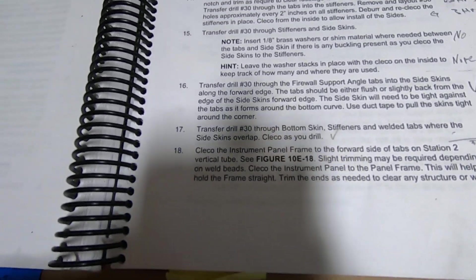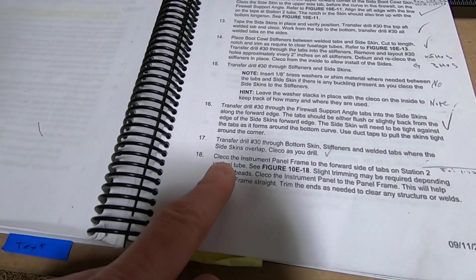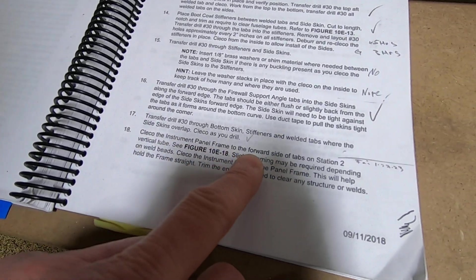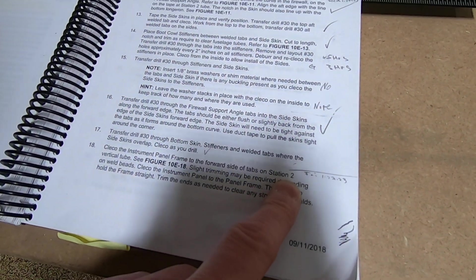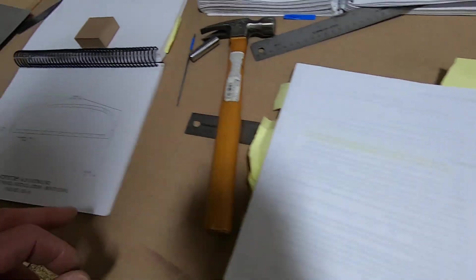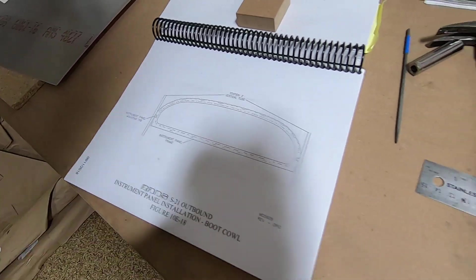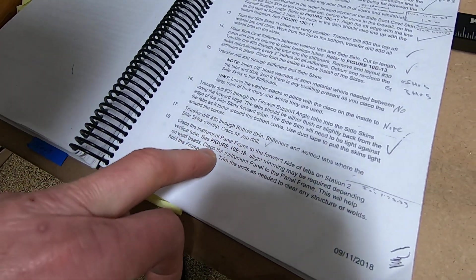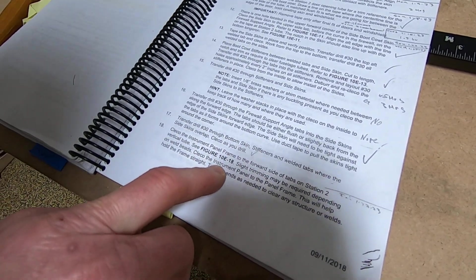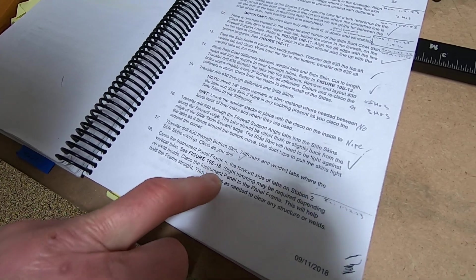Right here, Cleco the instrument panel frame to the forward side of the tabs on station 2, which I did just like the figure says. You put a Cleco in this way, you can't go from the back side.